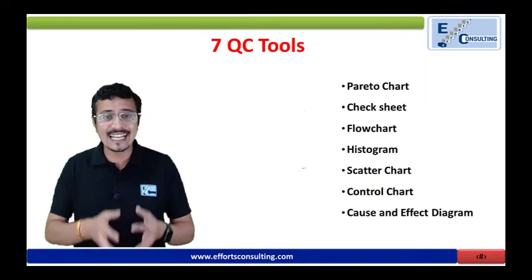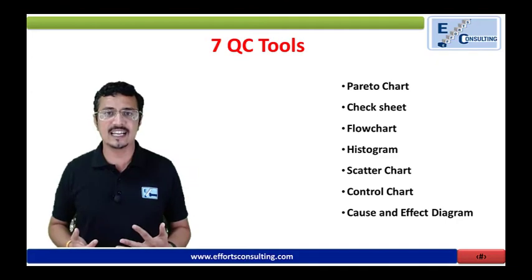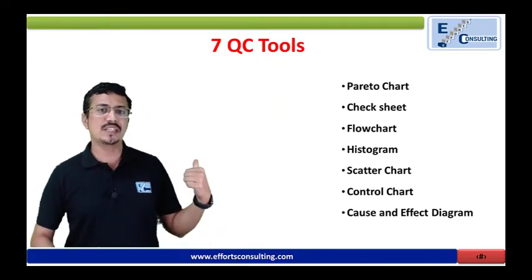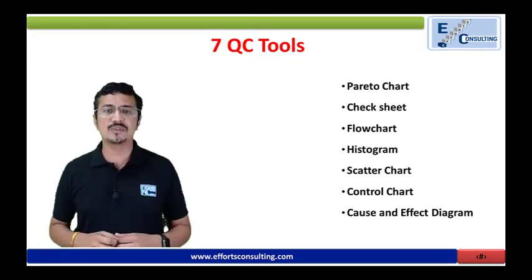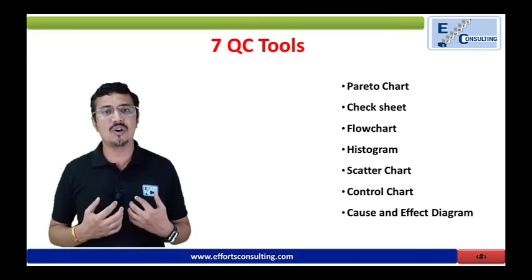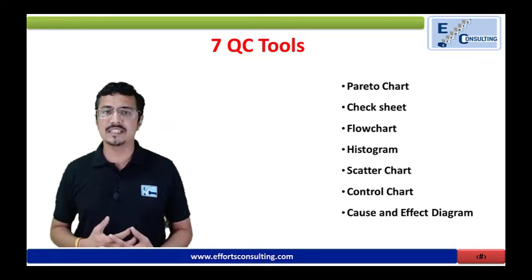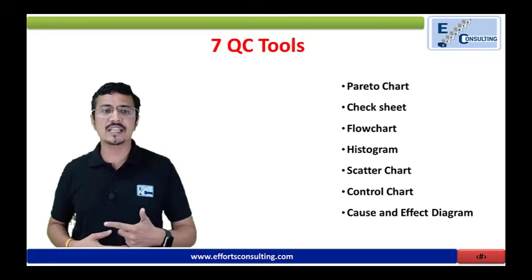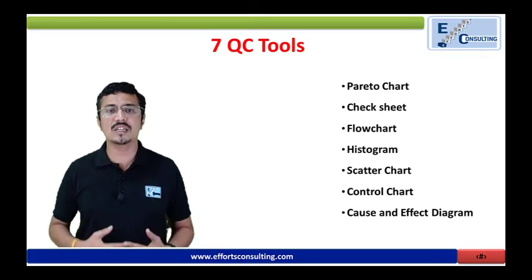Without getting into sophisticated statistical analysis software, through the 7 QC tools you can actually achieve your results. Let us understand these 7 QC tools and their impact on the causes. The seven QC tools are: Pareto chart, check sheets, flow chart, histogram, scatter plot, control chart, and cause and effect diagram.